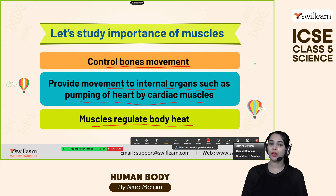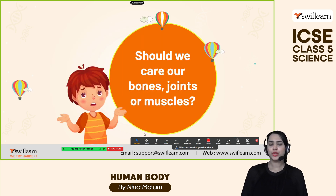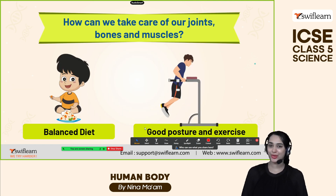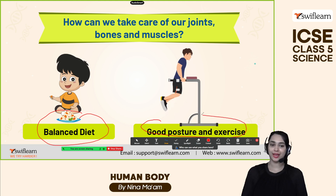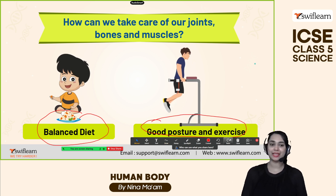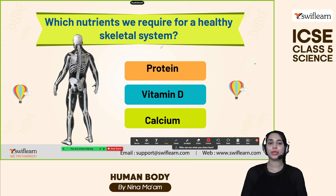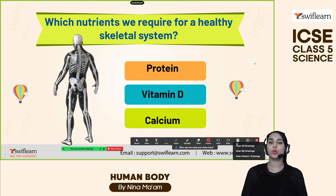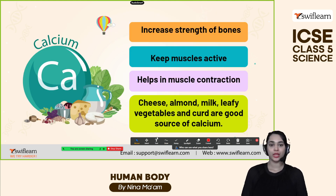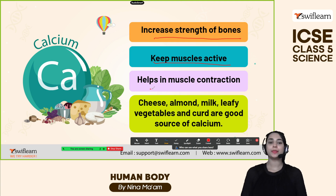Should we take care of our bones, joints, and muscles? Of course. We can take care of them through a balanced diet, good posture, and exercise. A balanced diet means including protein, vitamins, and minerals required for body functioning. The nutrients we require for a healthy skeletal system are protein, vitamin D, and calcium. Calcium increases the strength of bones, keeps muscles active, and helps in muscle contraction. Good sources of calcium include cheese, almonds, milk, leafy vegetables, and curd.